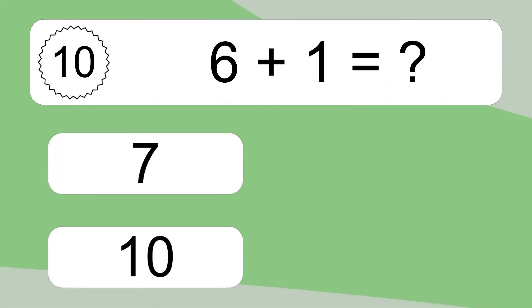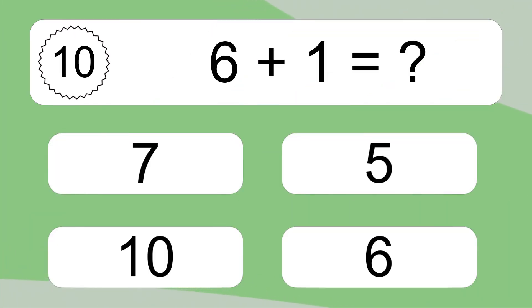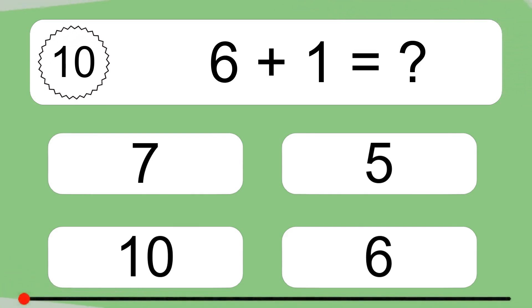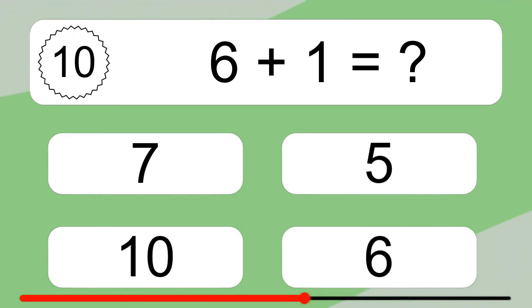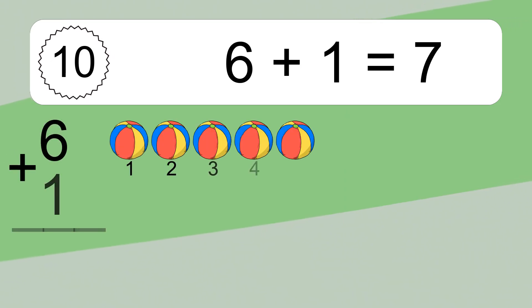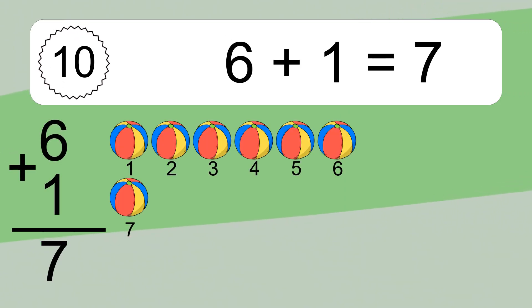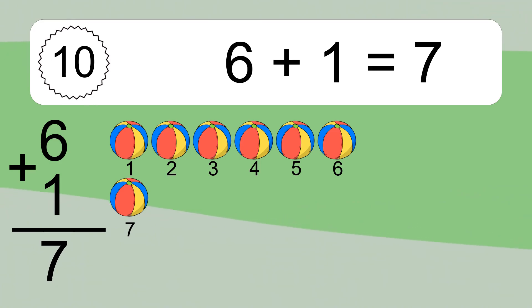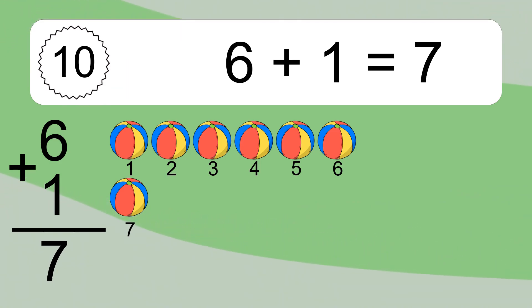6 plus 1 equals what? 6 plus 1 equals 7. Let's count it: 1, 2, 3, 4, 5, 6, 7.